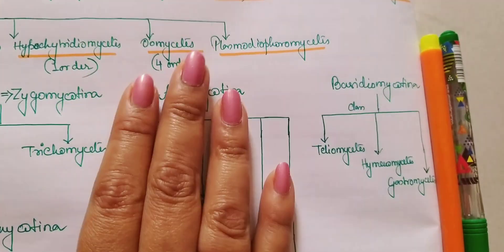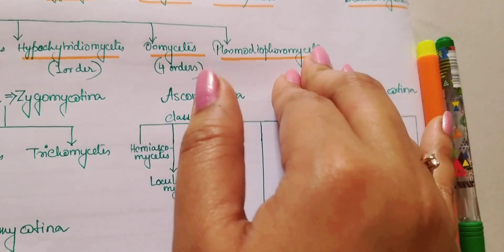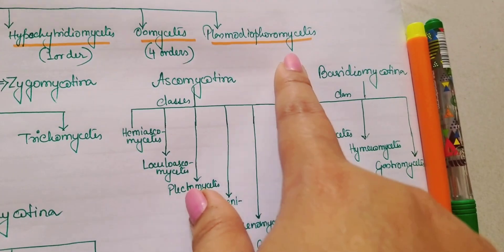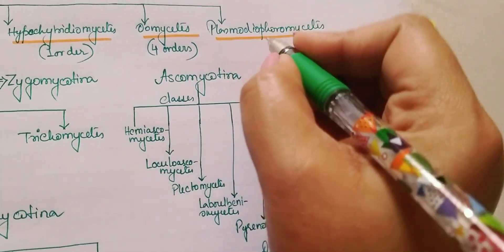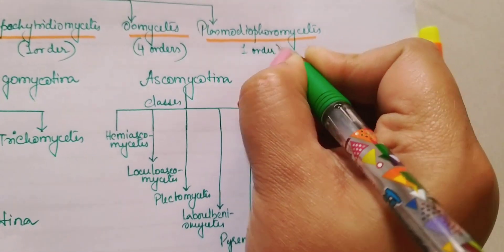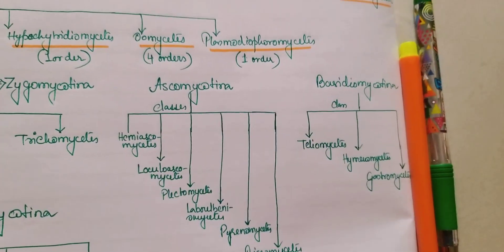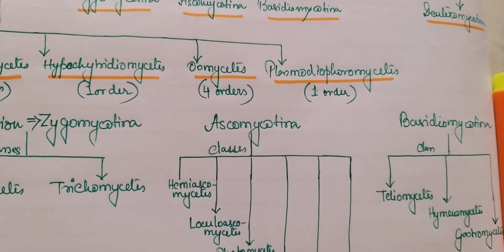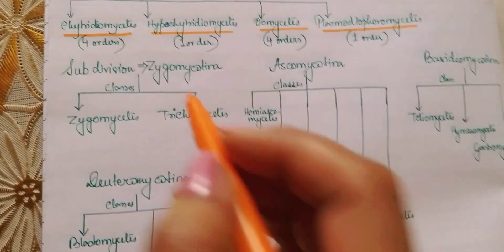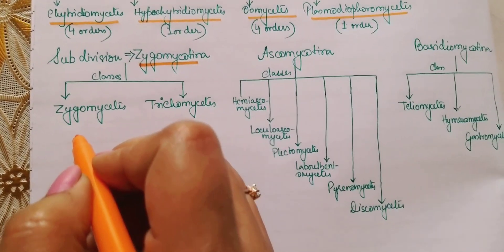Finally, the last class under Mastigomycotina is Plasmodiophoromycetes. Here you have only one order, and the name of that order is also Plasmodiophoromycetes. Then we move on to the subdivision Zygomycotina.